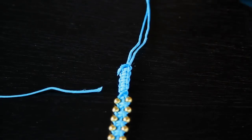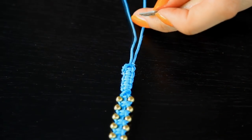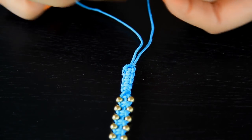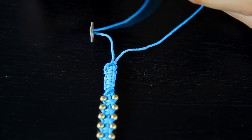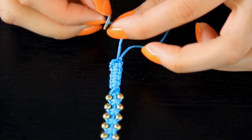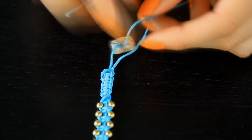Now with the two cords hanging, you could add in a button if you like, or a hook closure. I'm going to add in a button since I have plenty of buttons from my last tutorial. Add the button, tie a knot, and you're done! Enjoy your new bracelet!